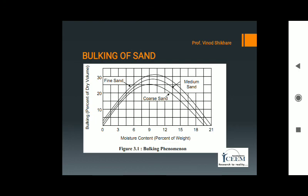Bulking plays an important role in volume batching of fine aggregates for manufacturing of concrete. If the necessary correction to compensate for bulking is not made, the concrete mix will be under-sanded, because the measured volume of bulk sand is greater than the actual volume of sand. Therefore, the bulking of sand test must be done before any design of concrete.